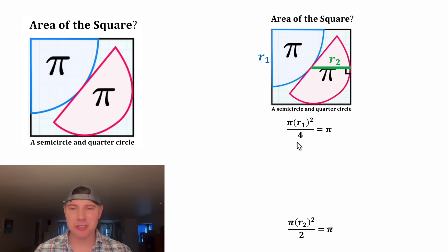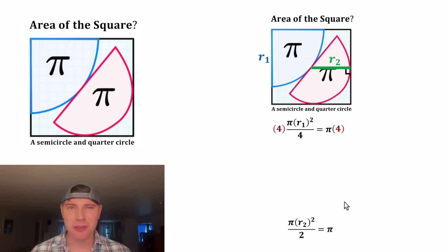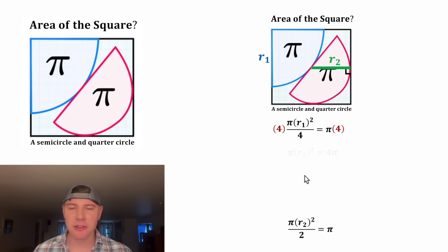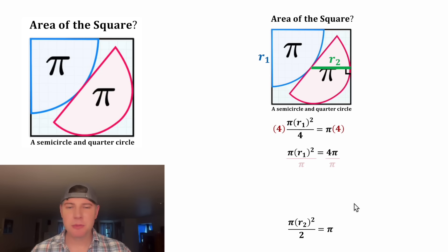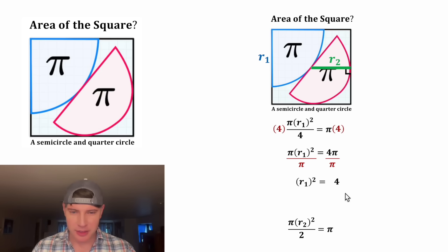The area of a quarter circle is pi radius squared divided by four, and that'll be equal to this area of pi. I don't really like fractions, so let's get rid of this denominator. We can multiply both sides of the equation by four — these fours will cancel each other out. So on the left-hand side we'll have pi R sub one squared, and on the right-hand side we'll have four pi. Next, we can divide both sides by pi, and that'll give us R sub one squared equals four.